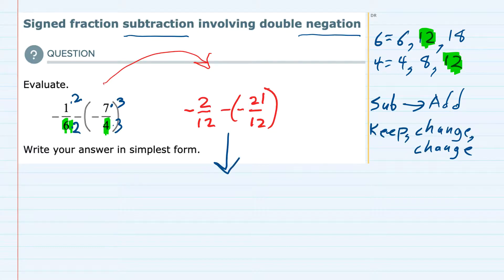We are going to keep the first sign, the negative, that's 2 over 12. We're going to change the subtraction into addition. And then we are going to change the sign behind the subtraction. So instead of a negative, this is now going to be a positive 21 over 12.